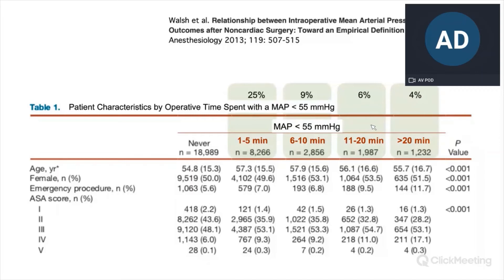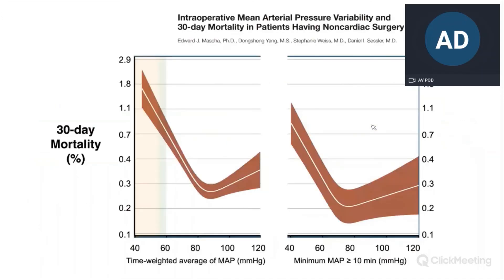These hypotensive events have an impact on the patient. Again from Cleveland Clinic, the group from Daniel Sessler, they related hypotensive events during anesthesia with 30-day mortality. Low blood pressures around 55 mmHg are associated with 30-day mortality of around 0.7 to 1% of patients. So reducing the occurrence of hypotensive events is highly clinically significant and important.